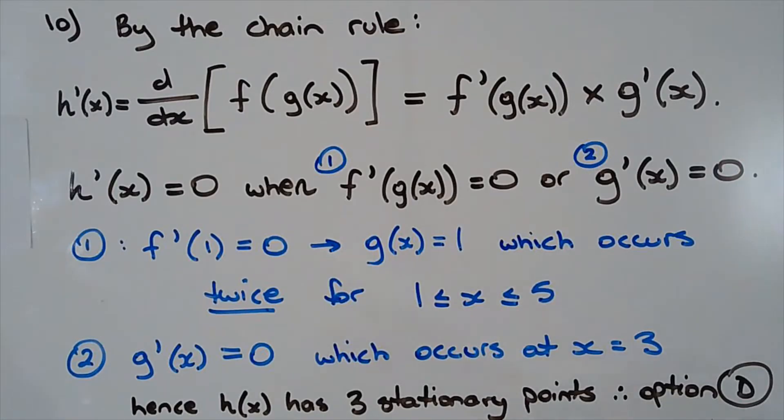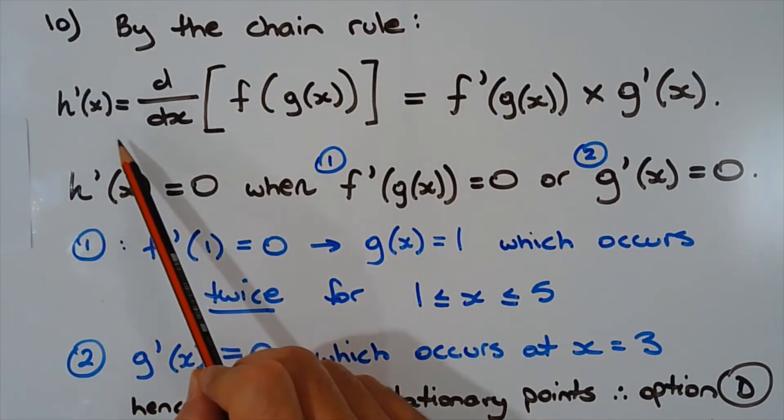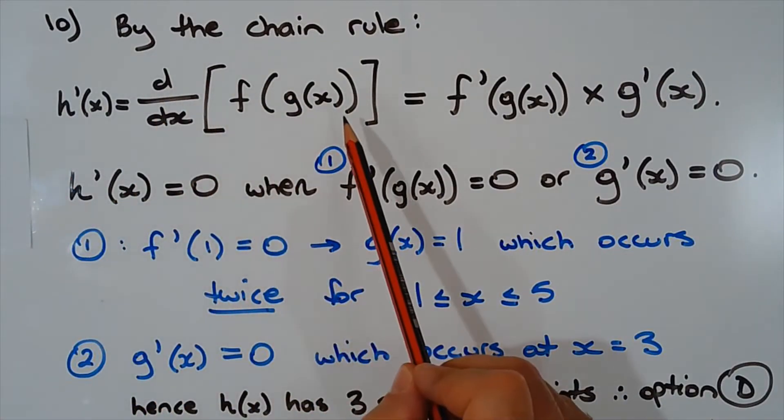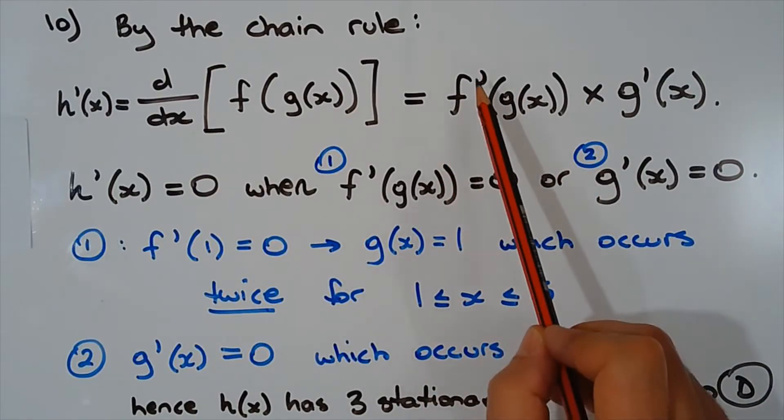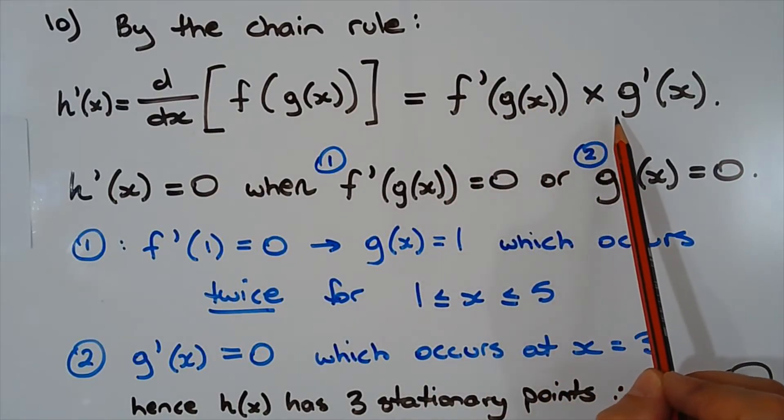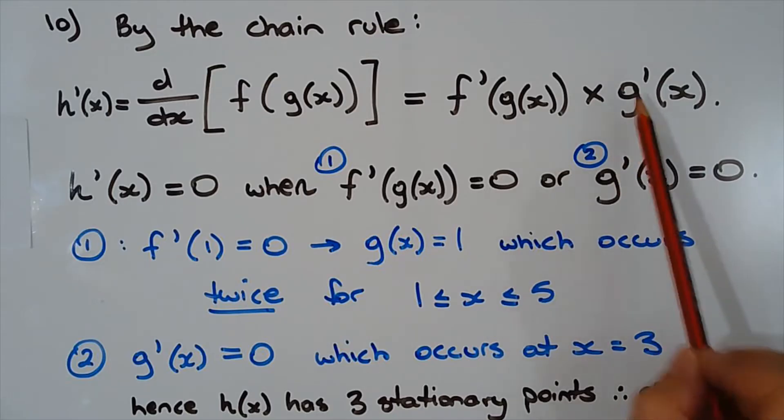h of x equals f of g of x, which is a composite function. To differentiate composite functions, the chain rule needs to be applied. h dash of x equals the derivative of f of g of x, which equals the derivative of the outer function, f dash of g of x, multiplied by the derivative of the inner function, g dash of x.